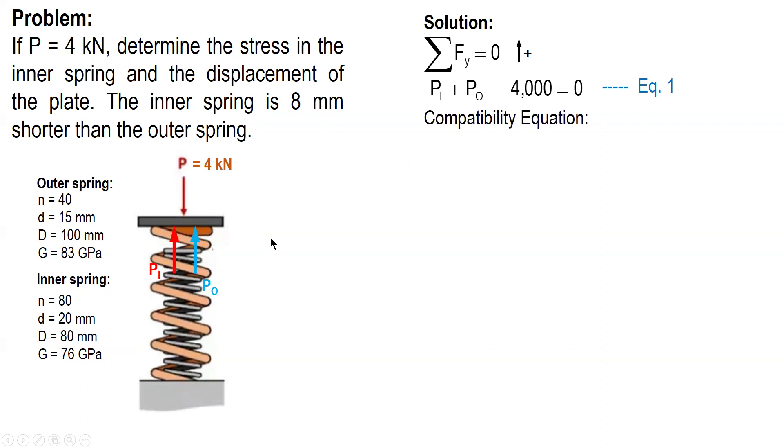So, initially, 8 mm gap between the inner and outer spring. This time, due to the load, the plate is compressed. Okay, assuming this is the final position of the plate. From this initial position up to here, this one is the deformation of the outer spring. The outer spring is in contact with the plate here, and this is the deformation of the outer spring.